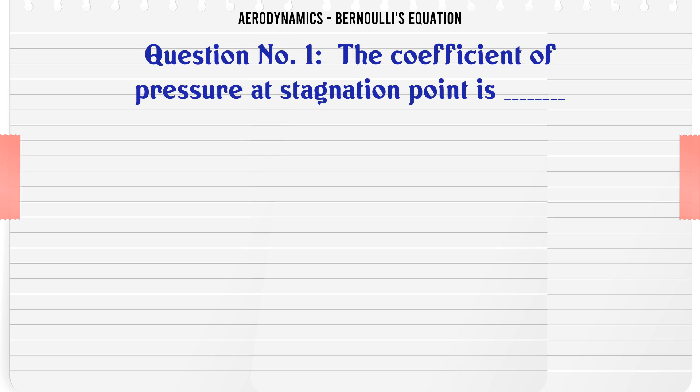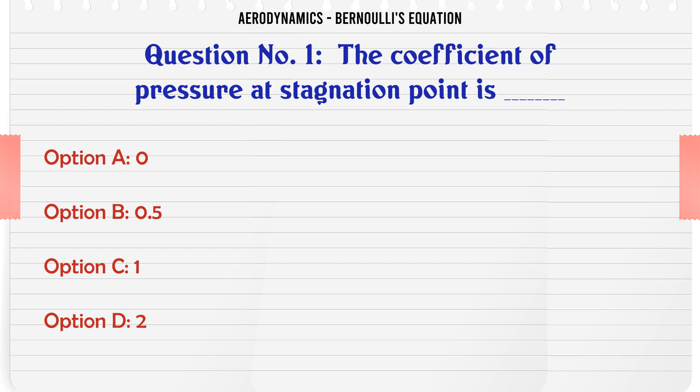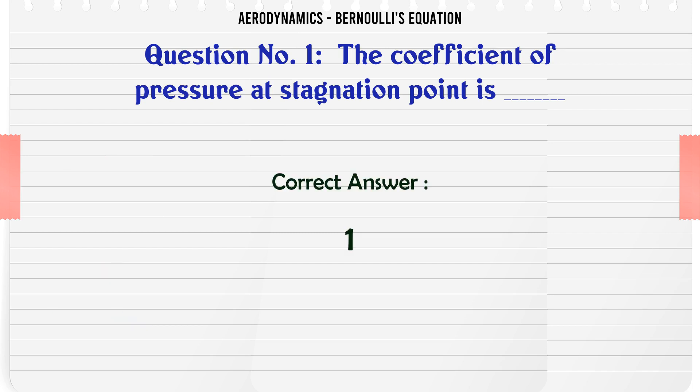The coefficient of pressure at stagnation point is: A. 0, B. 0.5, C. 1, D. 2. The correct answer is 1.